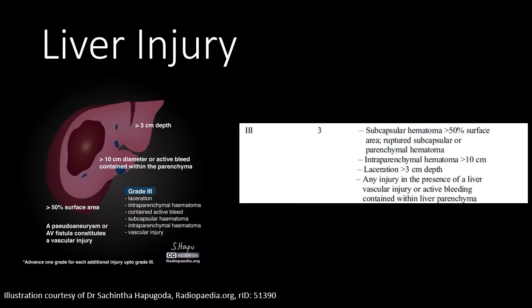A grade three liver injury is more severe, where we see the subcapsular hematoma occupying more than 50 percent of the surface area, or a contained hematoma greater than 10 centimeters, or any contained hematoma showing active extravasation. Lacerations classified as grade three will be greater than three centimeters in depth. Note that you can increase the grade if there are multiple injuries — two grade two injuries become a grade three, and three grade one injuries could also be a grade three.